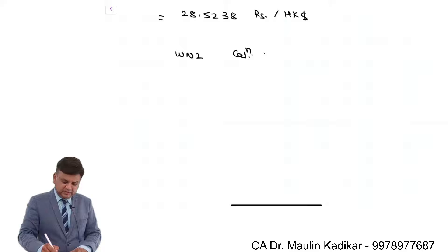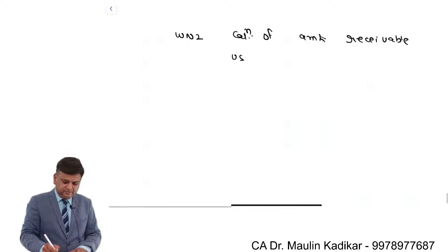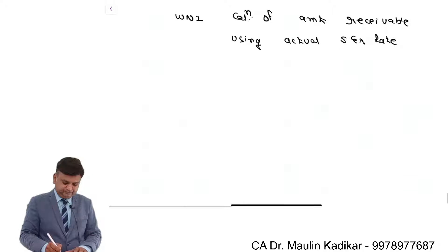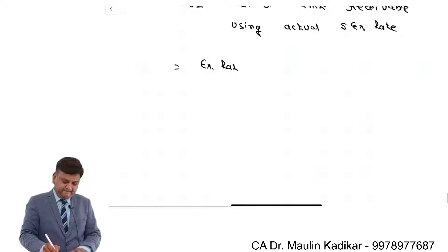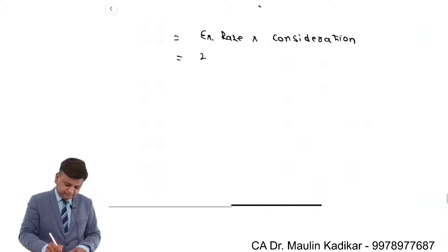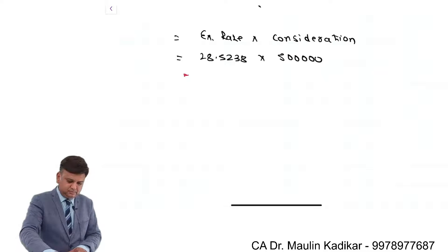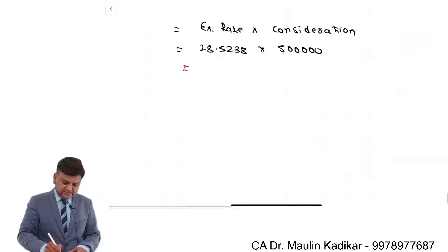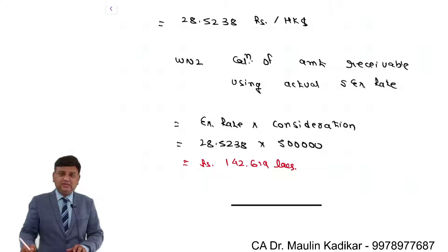Working note number 2: calculation of amount receivable using the actual spot exchange rate. The exchange rate of 28.5238 rupees per HKD multiplied by 5 lakhs gives 142.619 lakhs rupees. This is the amount that would be received if you had not entered into the forward contract.